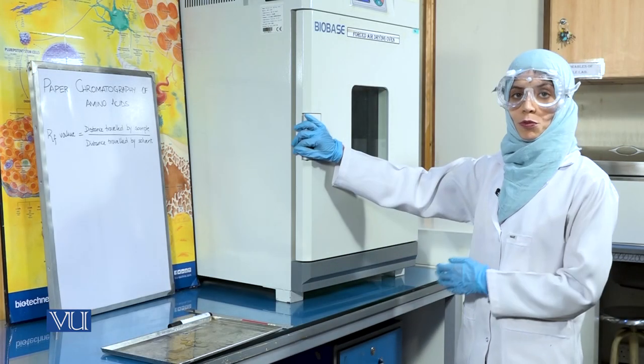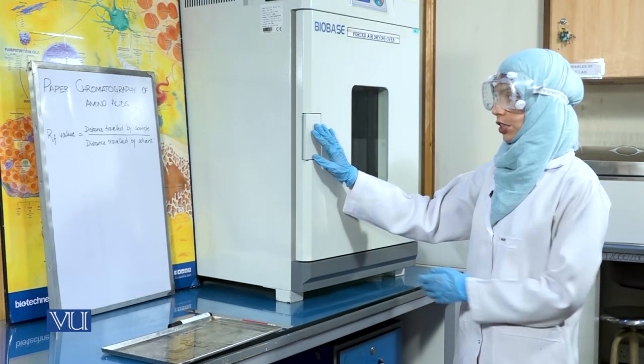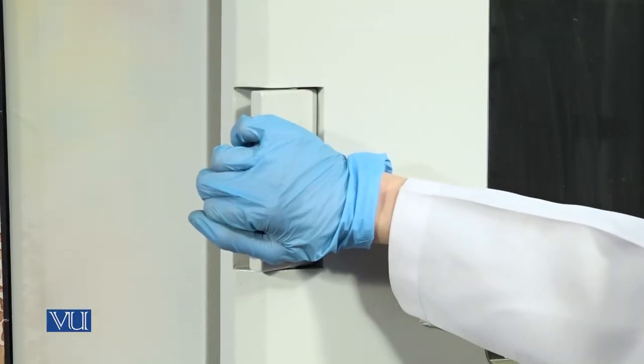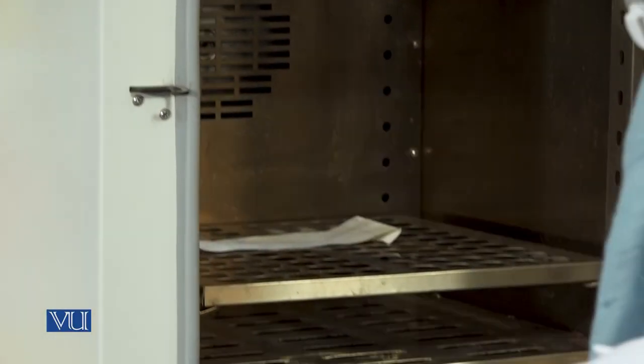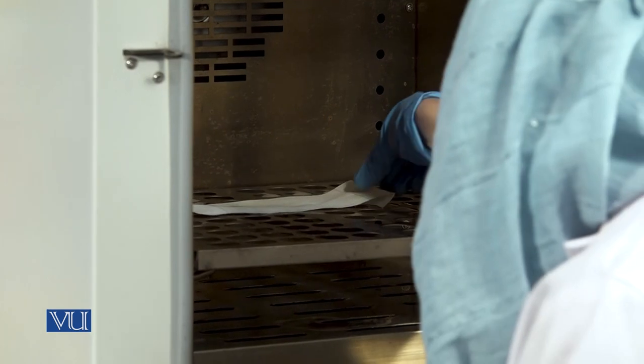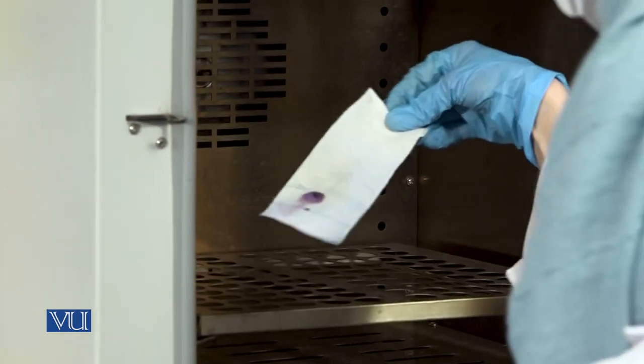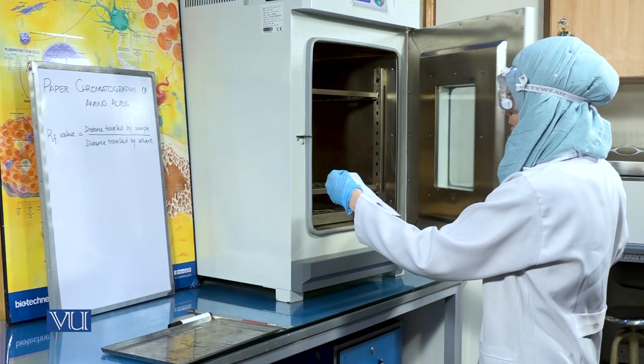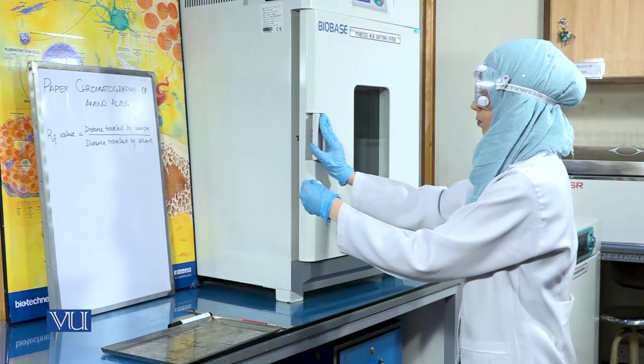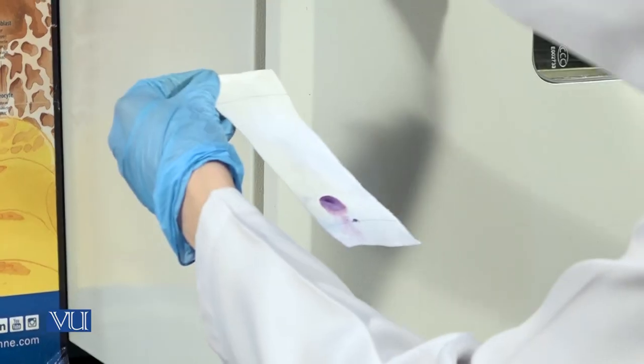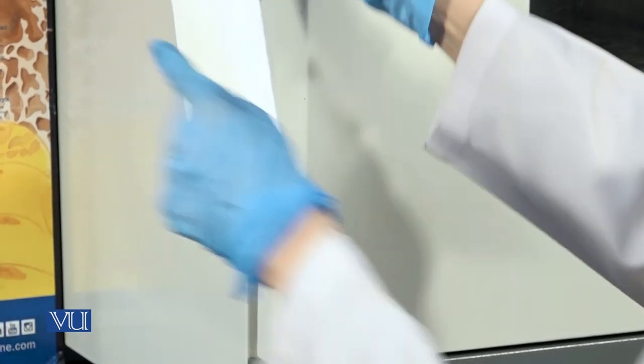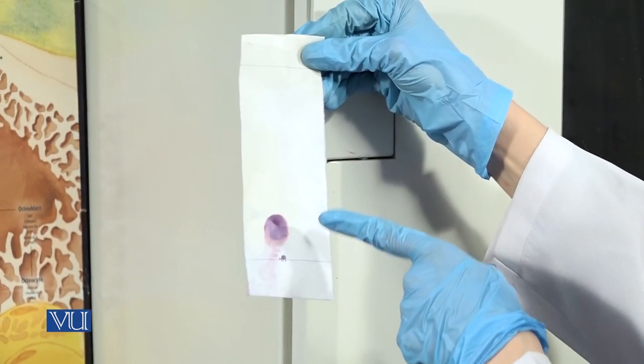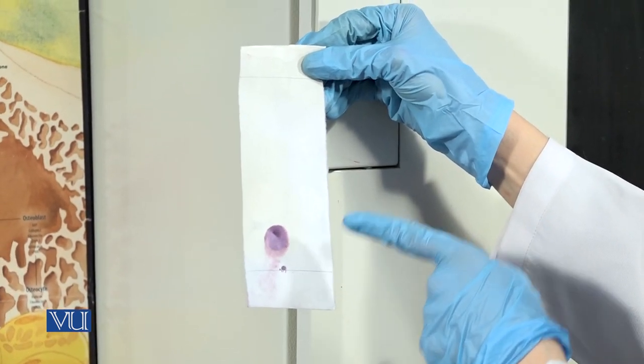After five minutes, we will remove this chromatogram from the oven. You will be able to clearly see the spot of the amino acid on the chromatogram.